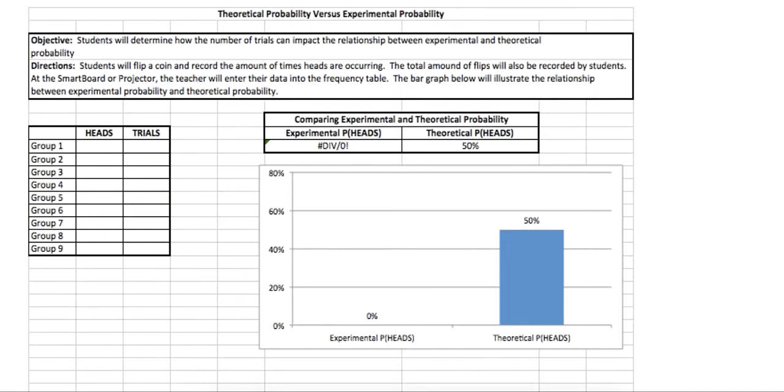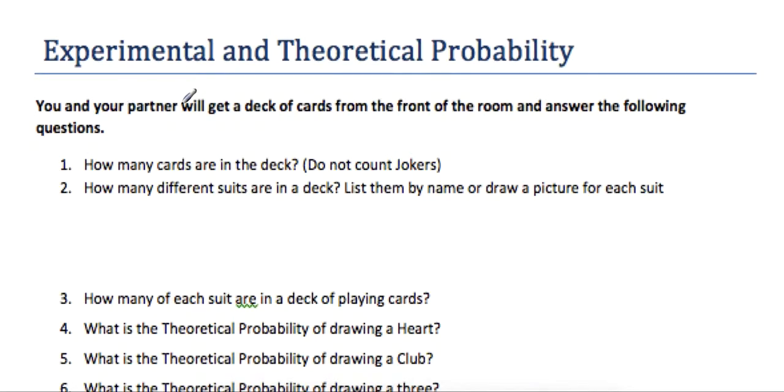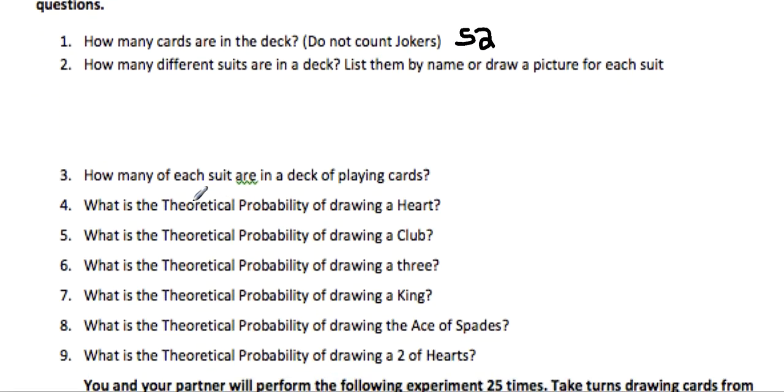So what you're going to do today is I'm going to hand you a deck of cards. You're going to do an experiment. You and your partner will get a deck of cards from the front of the room and answer the following questions. First of all, how many cards are there in a deck? Just so you know, do not count the jokers. So there's 52 cards. You need to look at them and decide how many different suits. Suits are the things that change and make them look different. There's always four cards, like four threes, and each one is a different suit.